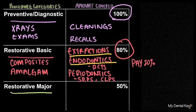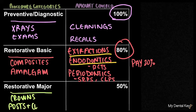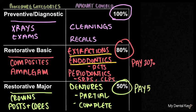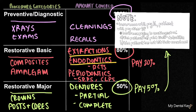The final category of procedures is restorative major. This section is reserved for what would typically be considered a case for a dentist, and usually involves replacement of teeth. These procedures include crowns, post and cores, dentures — both partial and complete — and fixed partial dentures. For this plan, major services are covered at 50%, so the insurance will pay half and the patient is responsible for the other half. Again, we'll go over how to calculate the cost of this in a later video.